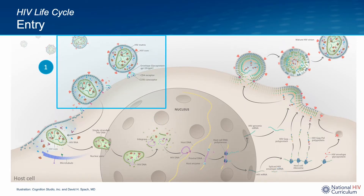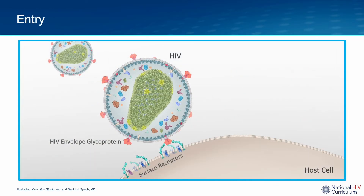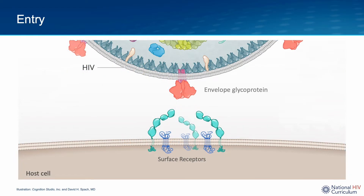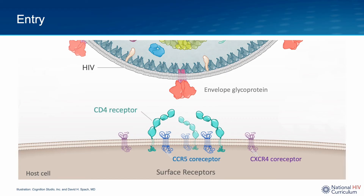Now let's take an in-depth look at the first step in the HIV life cycle: HIV entry. This initial step involves a complex interaction between the HIV envelope glycoproteins and the host cell surface receptors. In this close-up view, HIV is shown on the top and the host cell is shown on the bottom, essentially like a lunar landing. On the host cell surface, the primary surface receptors involved during entry are the CD4 receptor and the chemokine co-receptors.